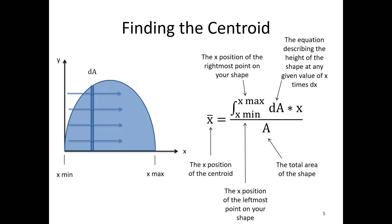You need to figure out dA — the mathematical function describing the height of the shape at any given value of x — before you do the integration. Once you find dA, you multiply it by x, which is our x distance, and that gets integrated. That first area moment integral is then divided by the total area of your shape. In this case, the total area of the parabola is the denominator of your fraction.